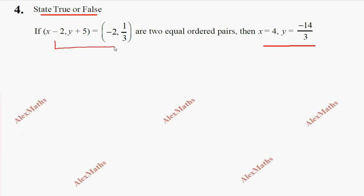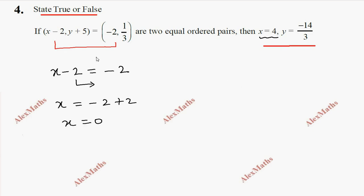This is a true or false type question. We equate: x minus 2 equals minus 2 plus 2 equals 0, so x equals 0. The statement says: if the ordered pairs are equal, then x equals 4, y equals minus 14. Since x equals 0, the answer is false.